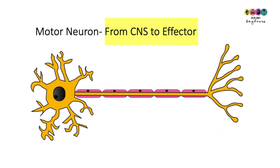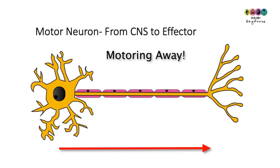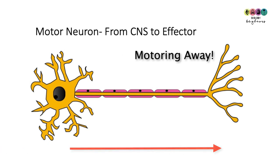Next it's the motor neuron. The big deal about the motor neuron is the direction of the impulse: away from the central nervous system towards an effector — a muscle or a gland. Think of motoring away, motoring on down that motorway. As always, draw in an arrow showing the direction of the impulse away from the cell body.